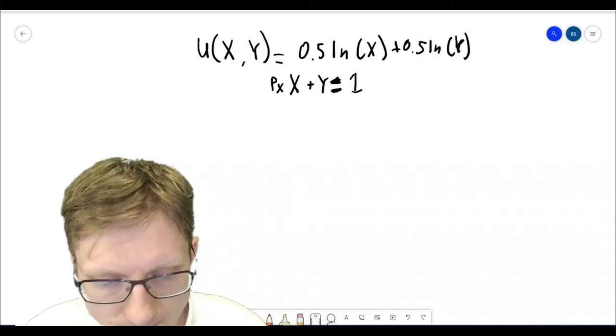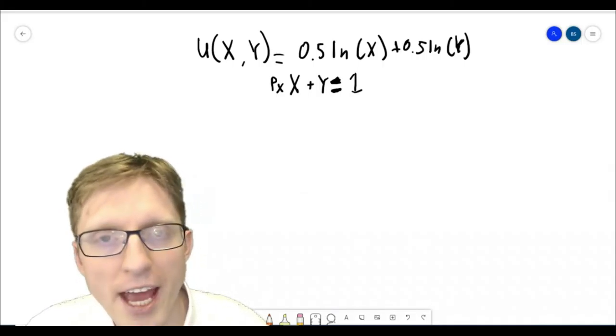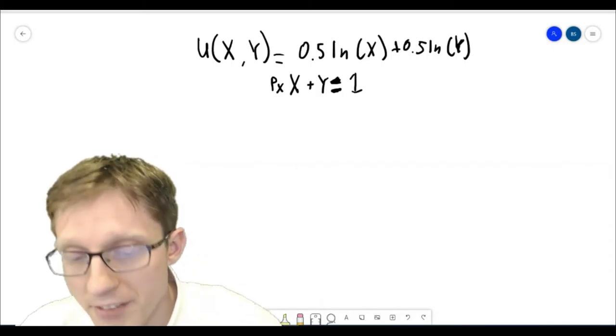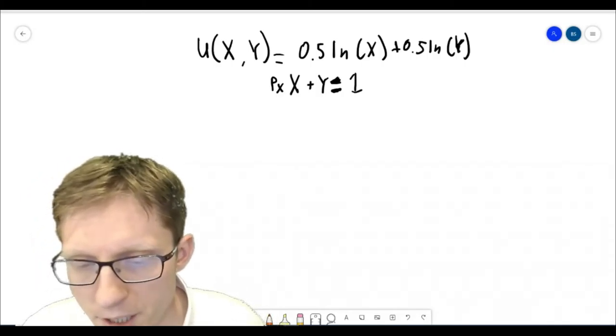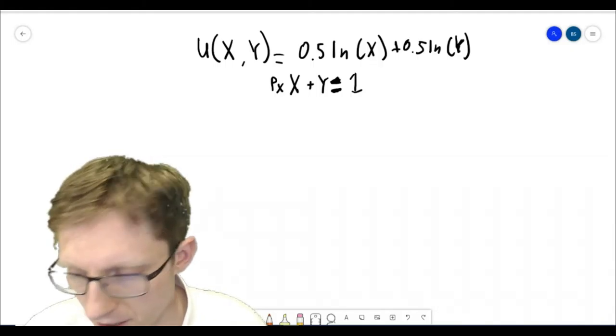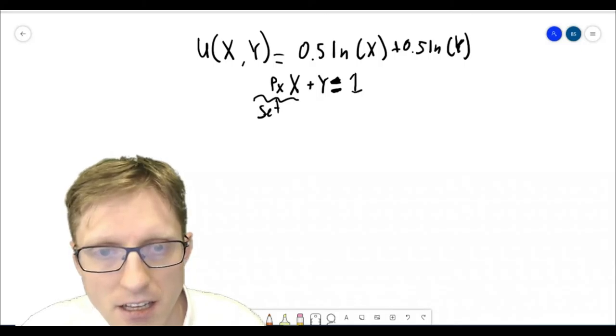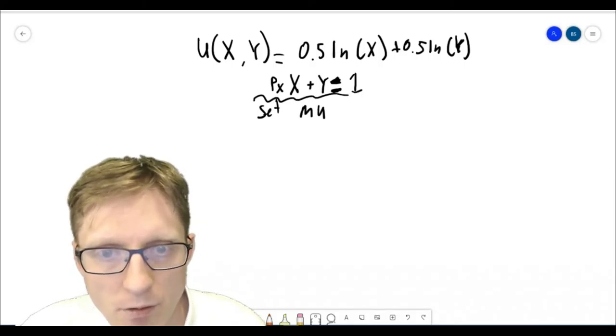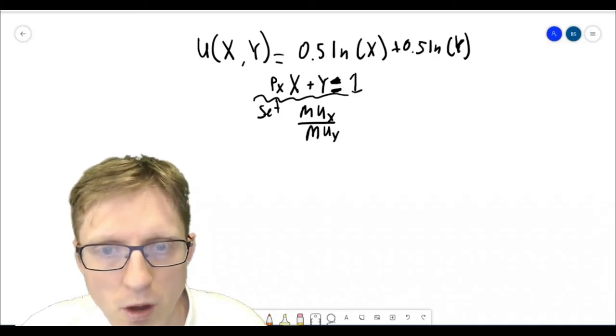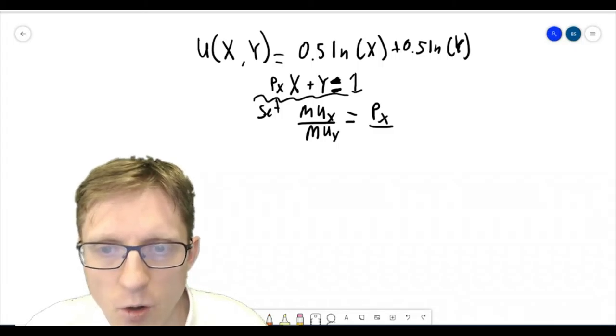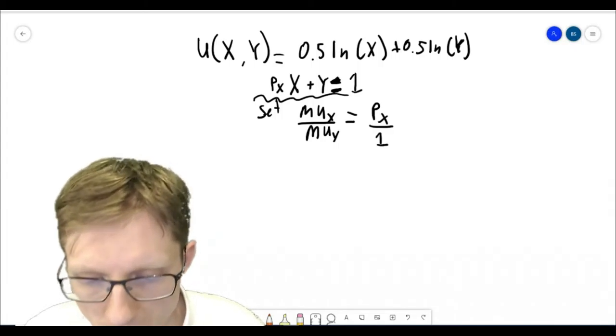So let's now go through and solve it. You can use any of the solution strategies that I went over in the last lecture or last mini video. The one I'm going to use here is the ratio of marginal utilities. So we're going to set marginal utility of good x over the marginal utility of good y equal to the ratio of prices, which is the price of good x over the price of good y, which in this problem is just equal to 1.